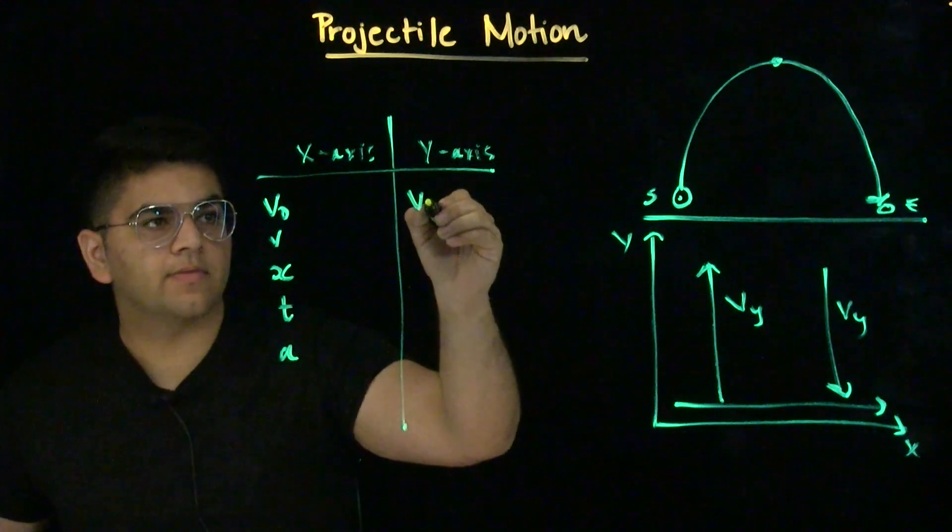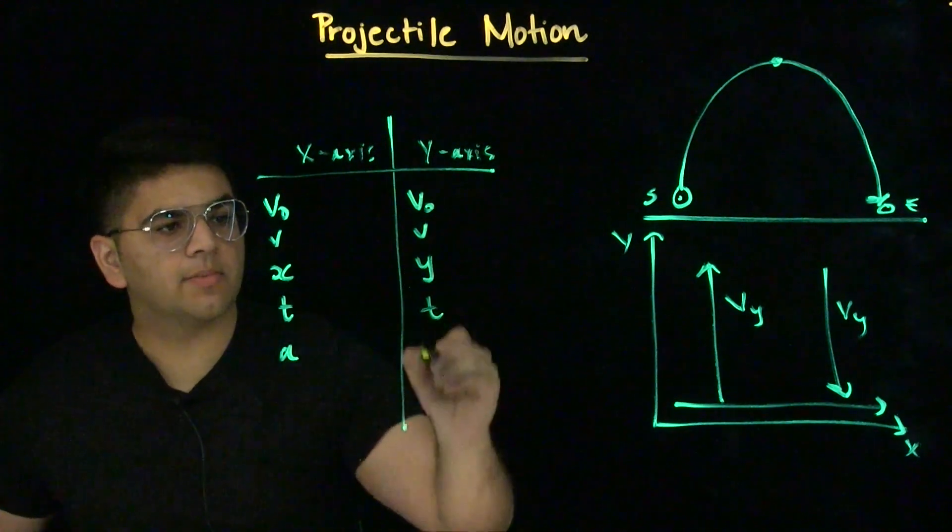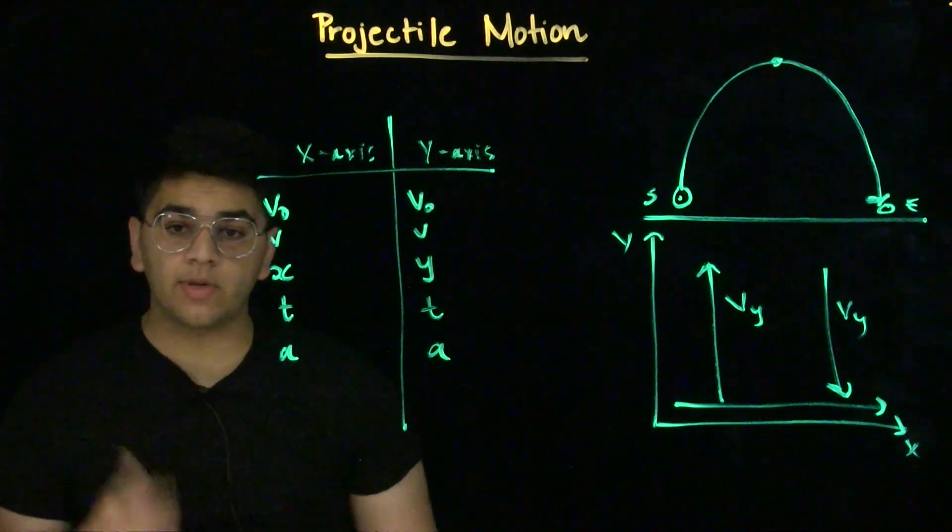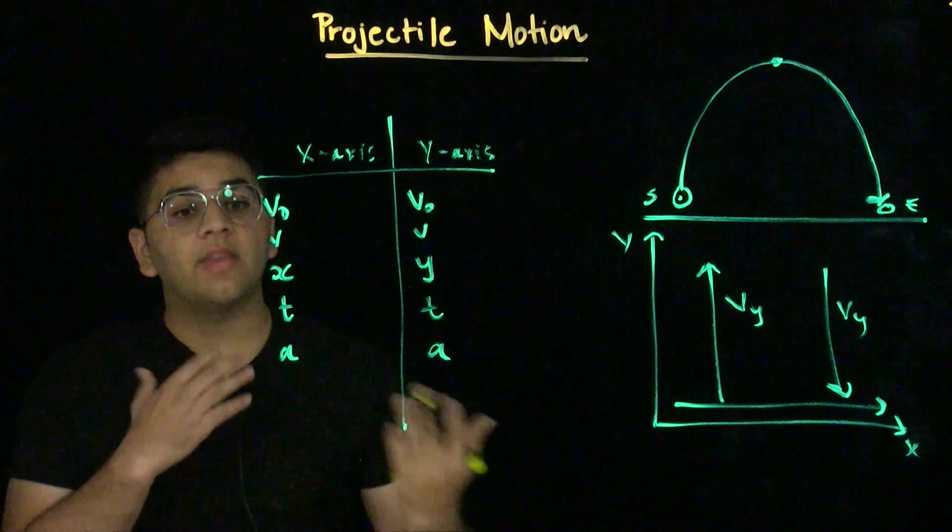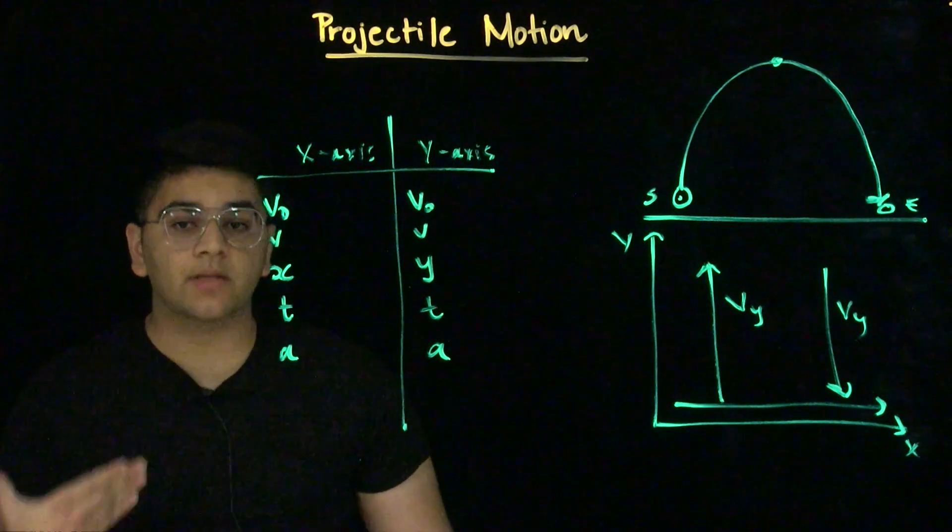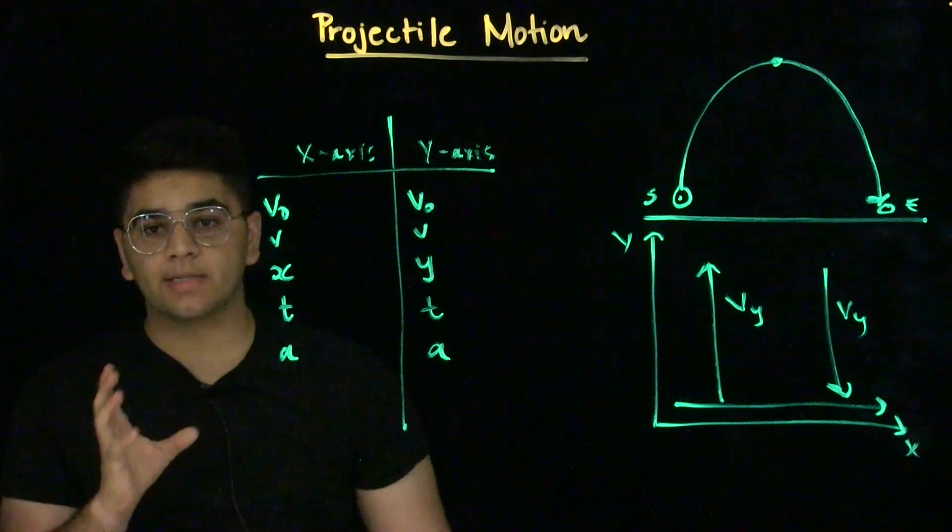Same thing on the y-axis. You have initial velocity, final velocity, displacement, time, and acceleration. And using the kinematic equations you've seen before, you can find the missing variables in each axis. That part will be very similar to how you've been doing kinematics so far. Now, what's important is to make sure you're splitting up the axes correctly.